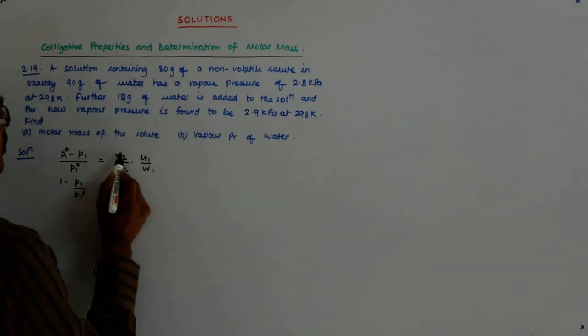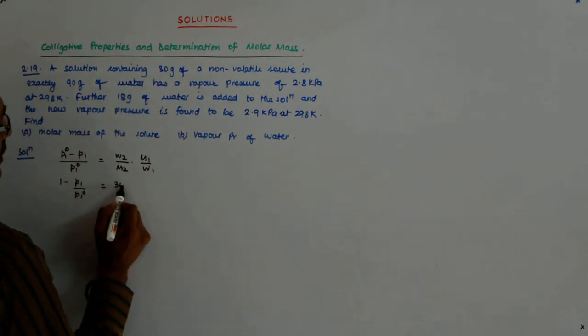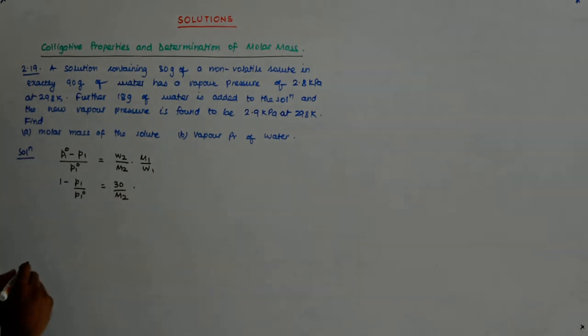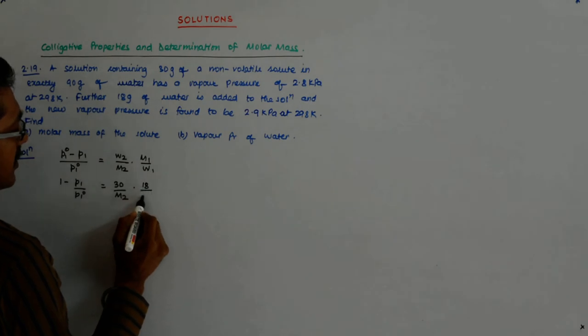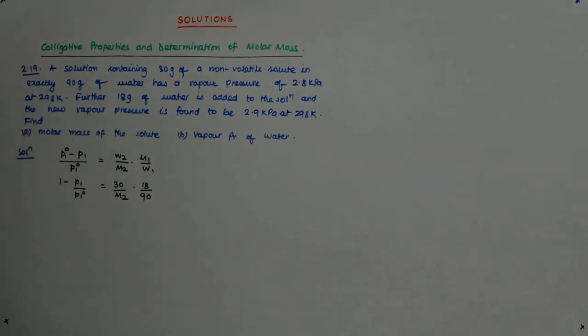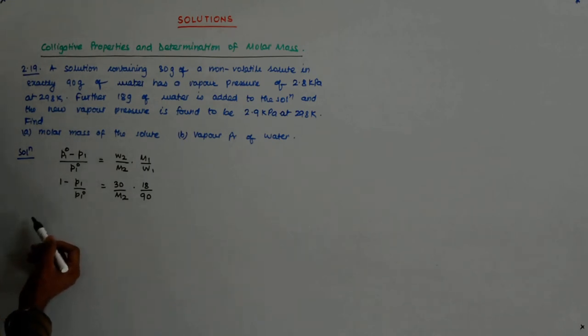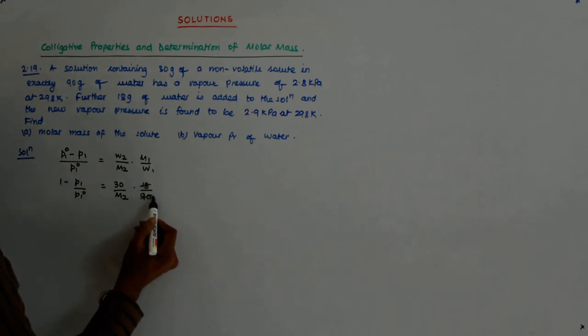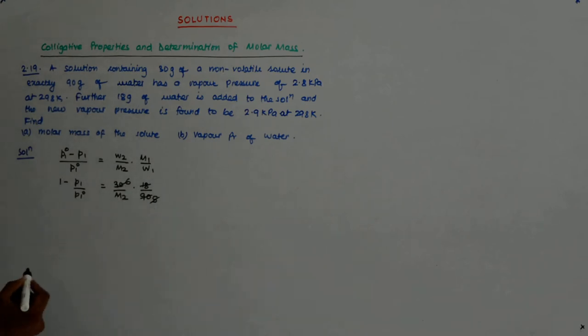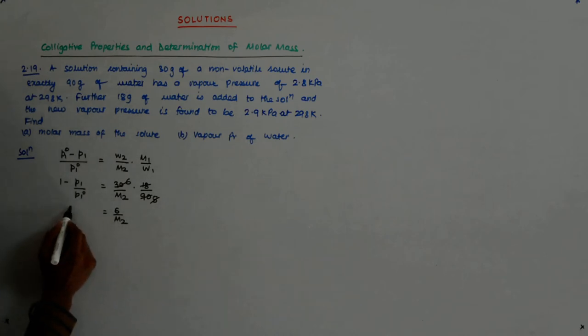Now, what is W2 in the first case? We put in 30 upon M2. What is M1? M1 is 18, what is W1? 90. So this simplifies to 6 upon M2 is equal to 1 minus P1 upon P1_0, right?